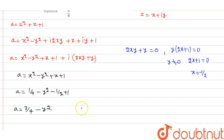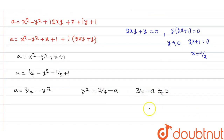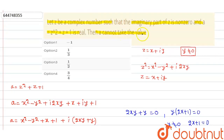So y squared equals three quarters minus a. Since y cannot be zero, three quarters minus a must not equal zero. Therefore a should not be equal to three quarters. This means a cannot take the value three quarters, so option 4 is the correct answer.